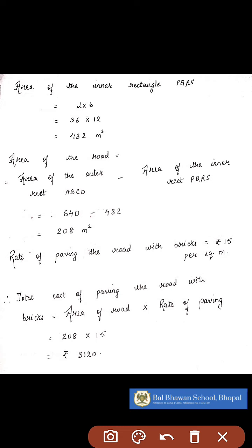Now when I subtract the area of the outer rectangle and the area of the inner rectangle, I will get the area of the road. That is 640 minus 432, which is 208 meter square.